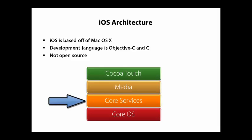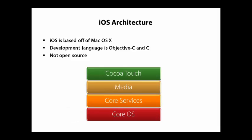Then you have the Core Services below that, which is another layer mainly providing services used by the upper layers, with a few things like location services that you'll access directly. And then the Core OS layer below that, which has a lot of the Mac OS components — the low-level operating system type of things.